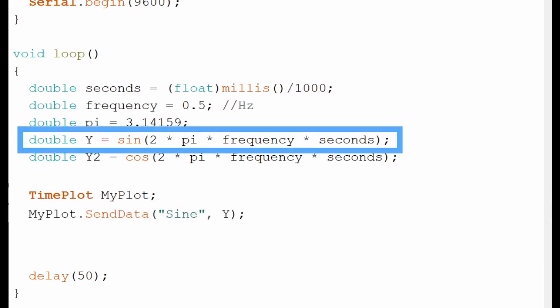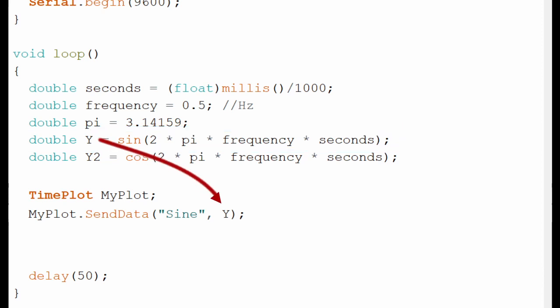Here I'm generating a sine wave for simplicity, but you can send numeric data from any sensor or measurement to MagunoLink in the same way. Finally, I have a delay at the end to make sure the serial channel isn't overwhelmed.